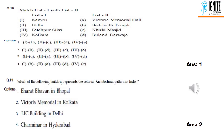Question 19 involves matching: Kamru is related to Badrinagar; Delhi is related to Kirki Masjid; Fatehpur Sikri is connected to Buland Darwaza; and Kolkata is related to Victoria Memorial Hall. Answer is option 1. Question 19 also asks: which of the following buildings represents the colonial architectural pattern in India? Answer is option 2 — Victoria Memorial in Kolkata.